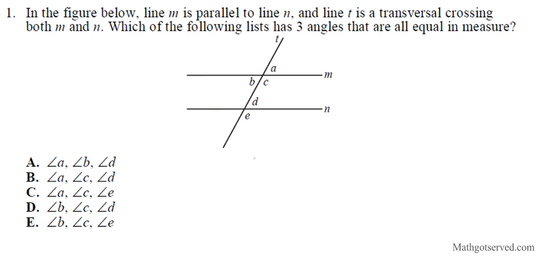It says in the figure below, line M is parallel to line N — so this line is parallel to this line — and T is a transversal crossing both M and N. Which of the following lists has three angles that are all equal in measure? This is a scenario where you have two parallel lines cut by a transversal.